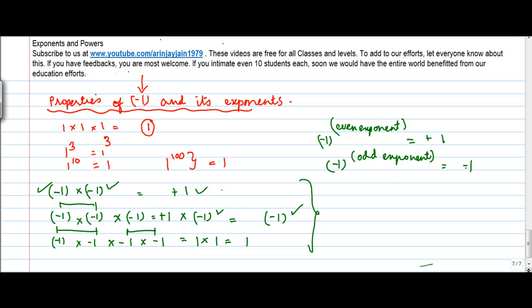this will always be equal to minus 1. So minus 1 with an even exponent is always equal to 1, and minus 1 with an odd exponent is always equal to minus 1. And this is true for any number of exponent which minus 1 has.